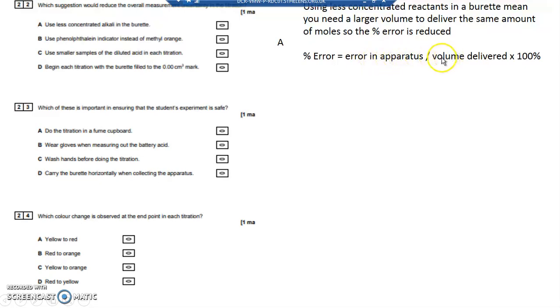Because this is a fixed number, a constant, divided by a larger number. Divided by a larger number means that your percentage error comes down. Which of these is important to ensure the student's apparatus is safe? Wearing gloves.